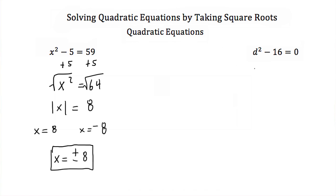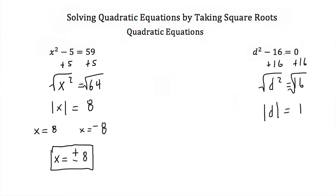Here I have d squared minus 16 is equal to 0. I want to get the variable alone on one side, so I'm going to add 16 to both sides and end up with d squared is equal to 16. Next, I square root both sides and get the absolute value of d is equal to 4, because the square root of 16 is just 4. Dropping the absolute value gives d is equal to 4 and d is equal to negative 4, or d is equal to plus or minus 4.